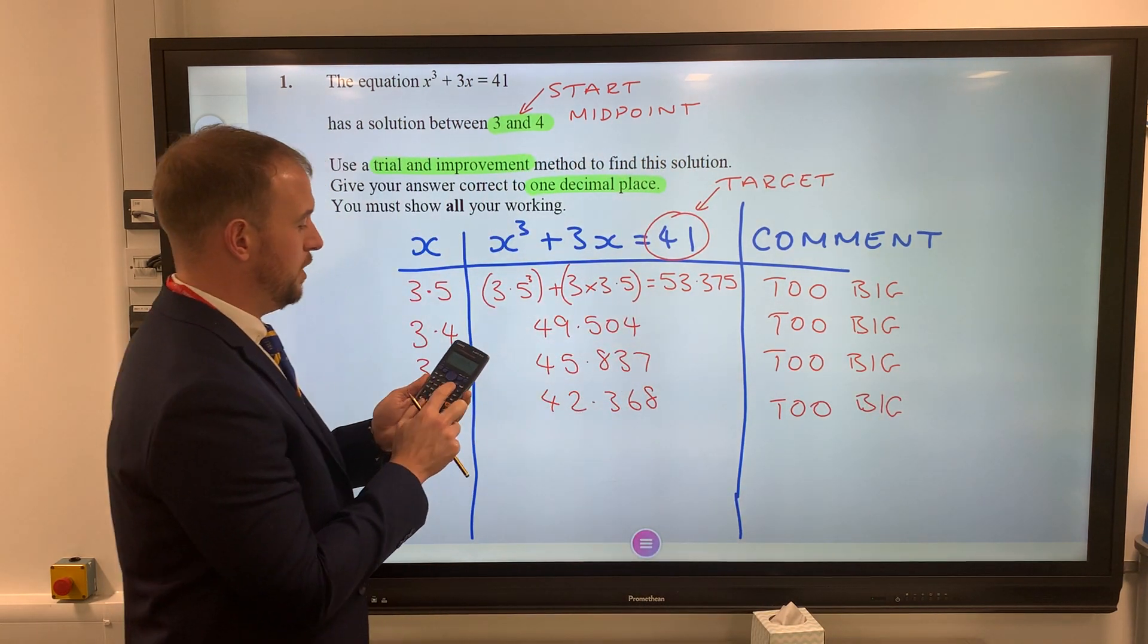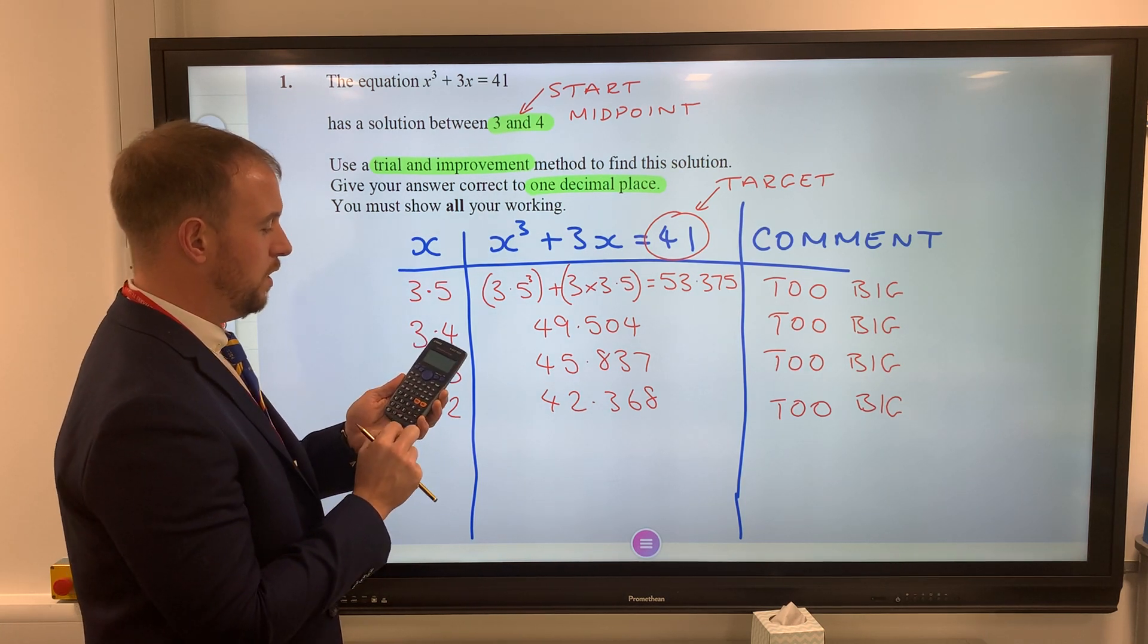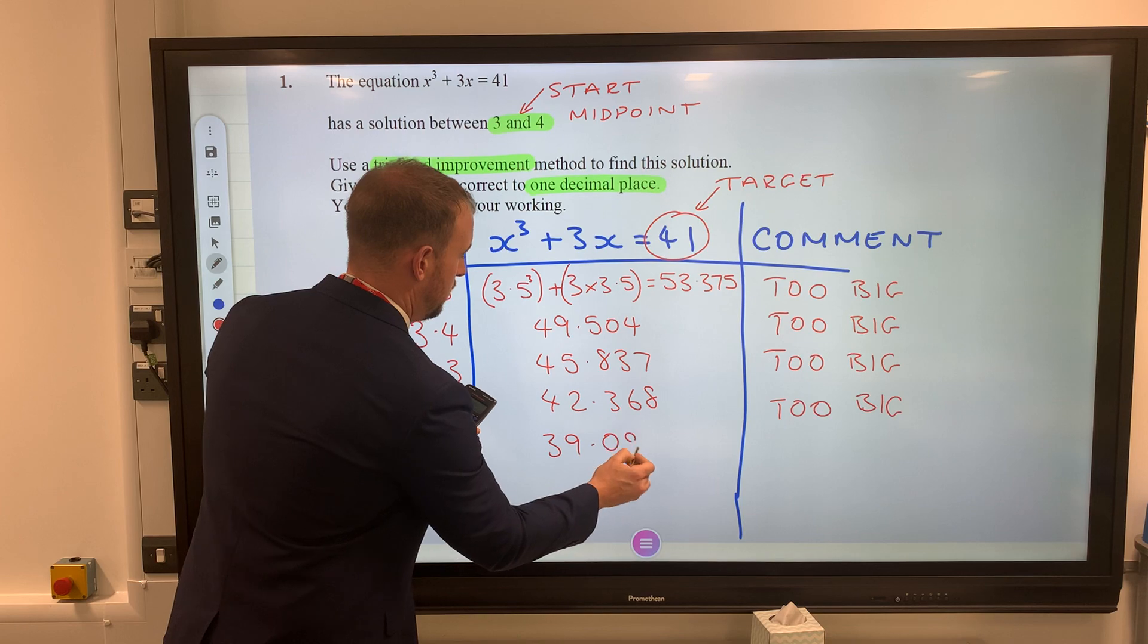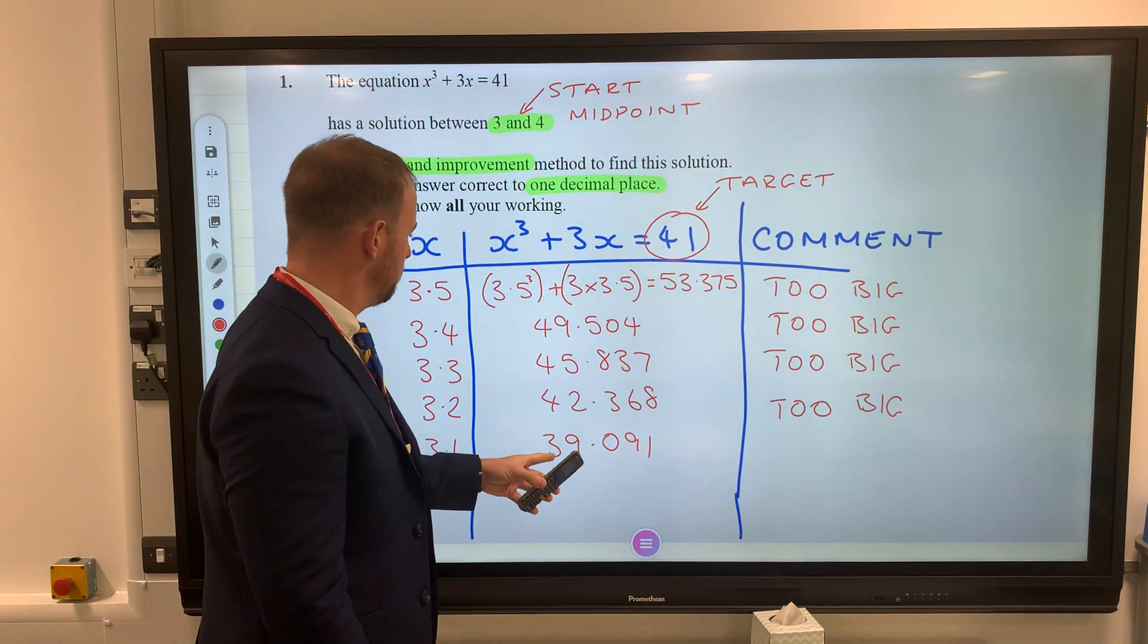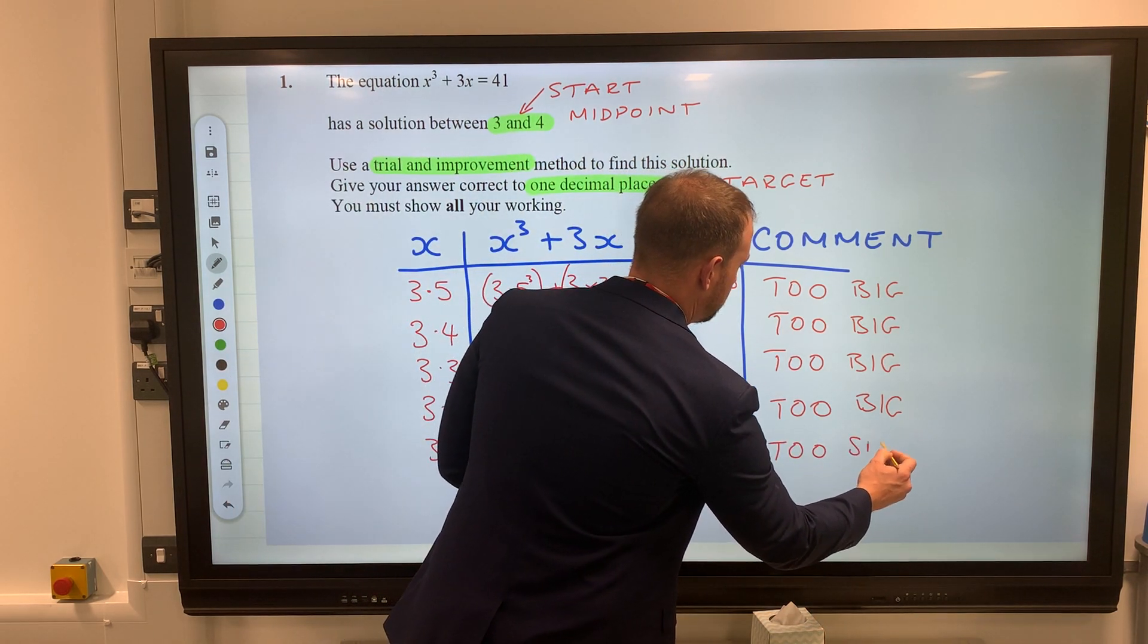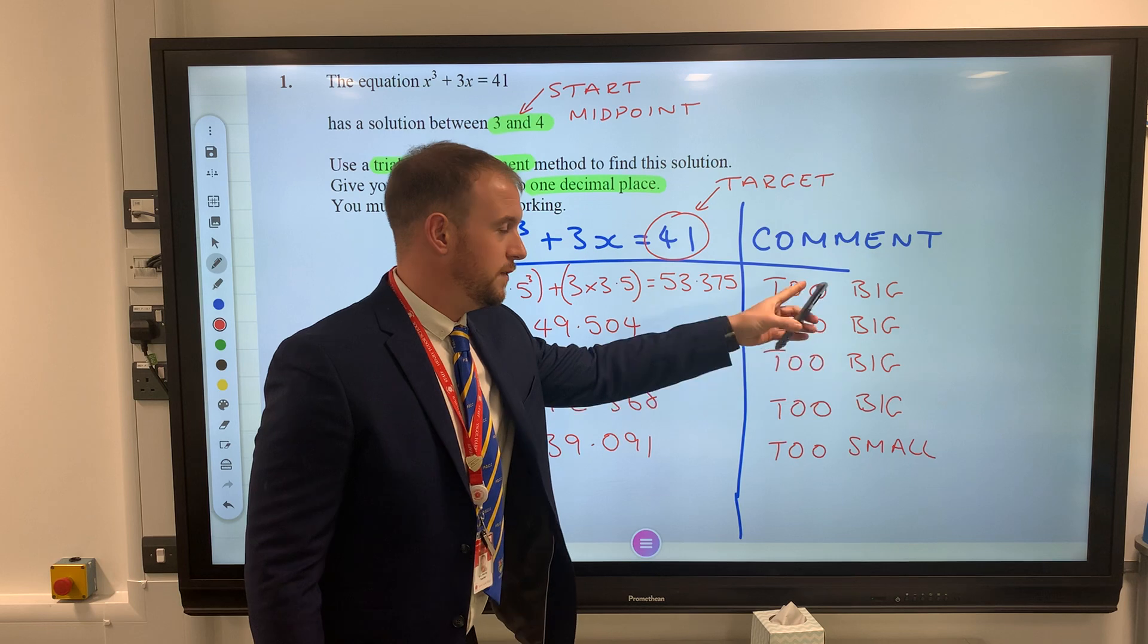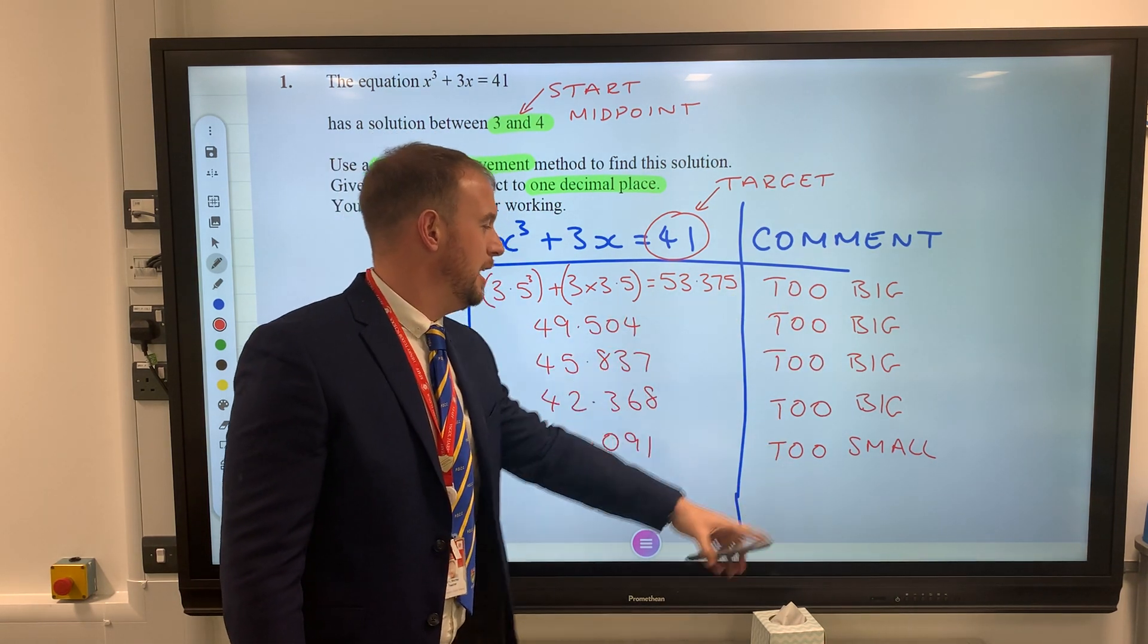If that's too big, let's try 3.1. I'm hoping you're just working alongside me here to see if your numbers on your calculators are exactly the same as mine. When they are exactly the same as mine, you know you're using this effectively. Now 39.031 is too small because we're looking to get 41. That's what will happen - you'll keep going until it's gone the other way.